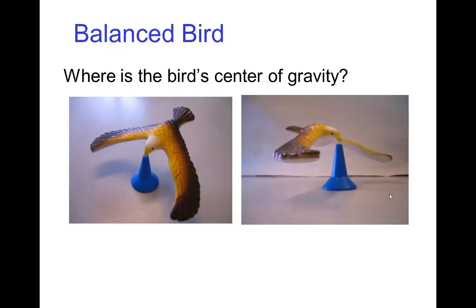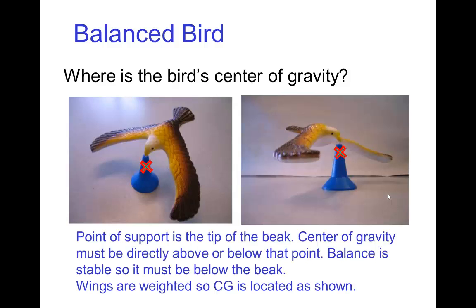So we see an example of that here. This little toy, the bird is balanced with its beak on the pivot point, which is that stand. And from this we realize the center of gravity, because this happens to be a stable balance, the center of gravity has to be directly below the pivot point.